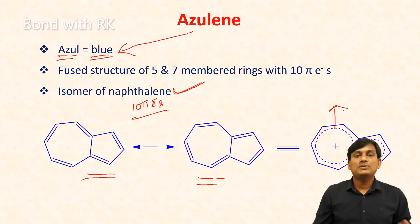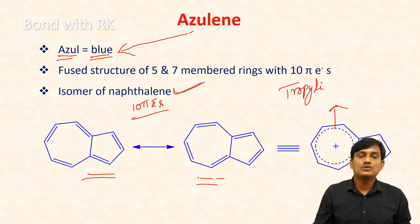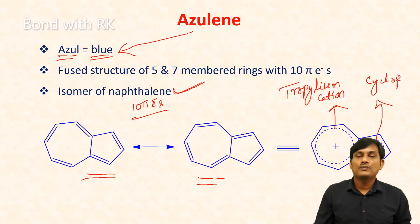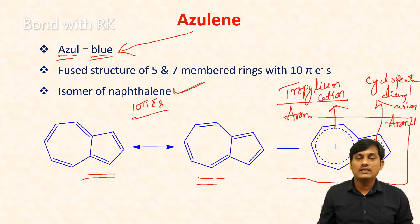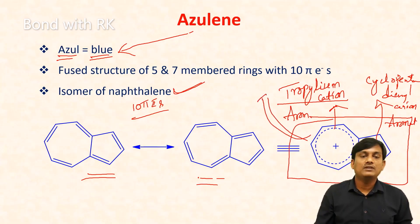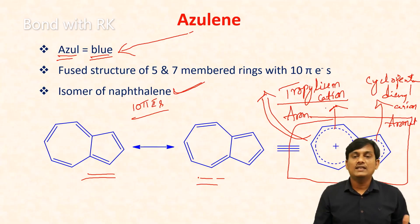In the resonance hybrid of azulene, you can find a tropylium cation. One ring is a tropylium cation and the second ring is a cyclopentadienyl anion. Tropylium cation is aromatic and cyclopentadienyl anion is aromatic. So finally, azulene is aromatic due to having two aromatic rings — one is the tropylium cation and another one is the cyclopentadienyl anion.